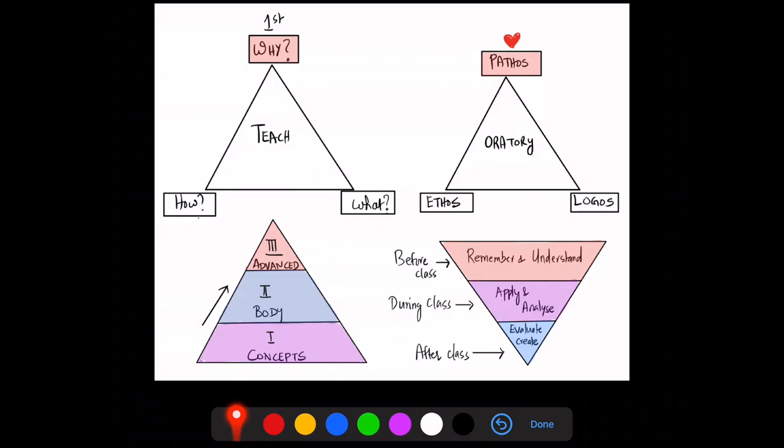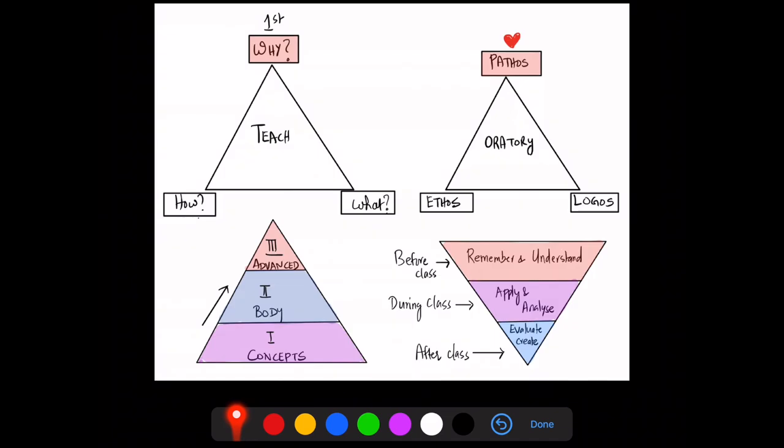Now we end it with the crux. We've seen so many threes and triangles. We've asked three questions: why, how, and what to teach—the most important being why. We've discussed the three elements of oratory: pathos, ethos, and logos, with pathos being the first. We've understood the three levels of learning—level 1 to 2 to 3—where level 1 is the most important. Let them understand level 1, the concepts, and only then take them to advanced. And we flip the triangle: students learn at home, apply in class, and after class, they create new ideas.